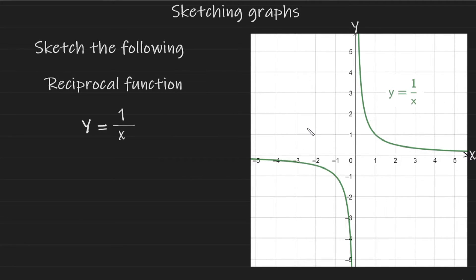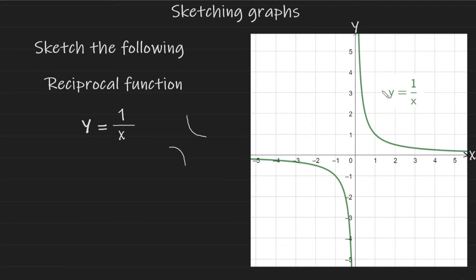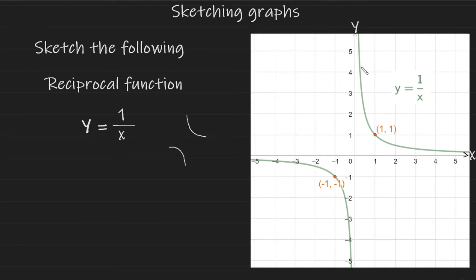The way I like to remember the reciprocal function is this: it's like two curved L-shapes — one in the top right-hand corner and one in the bottom left-hand corner — and they do not touch the x or y-axis. Commit to memorizing this. Also, although it doesn't have intersecting points with the axes, the graph of the reciprocal function does go through the points (1, 1) and (-1, -1).